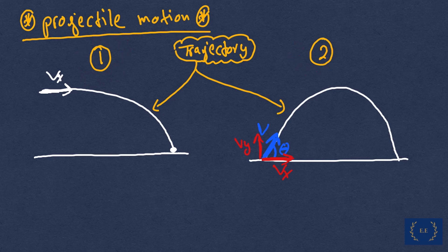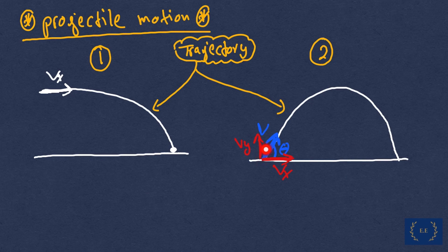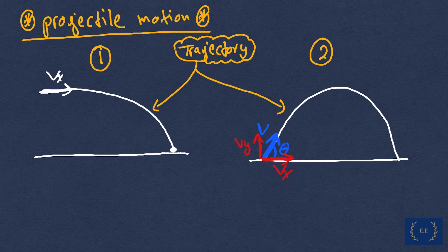The trajectory shows the path these objects follow, whether in case one or case two. In case one, we release or launch something horizontally and it simply goes down towards an end point — it could be off a cliff or a table. In case two, the best example is kicking a ball: the ball goes upward then falls back down. The velocity vector acts at a specific angle theta with respect to the ground, and its components are broken into the x and y parts.